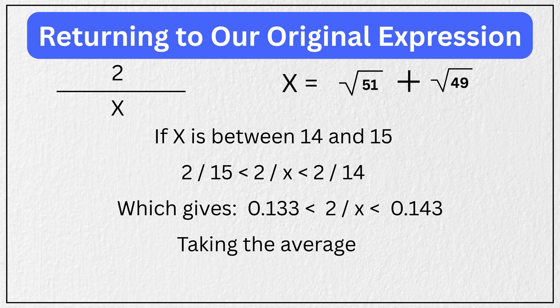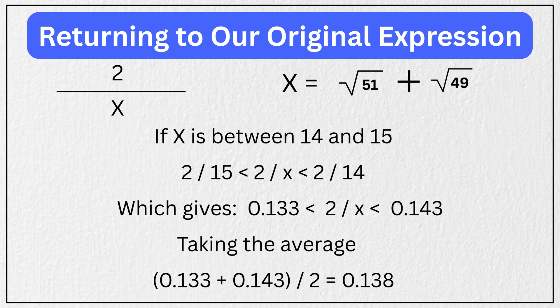Taking the average of these two gives us an approximation: (0.133 + 0.143) ÷ 2 = 0.138.